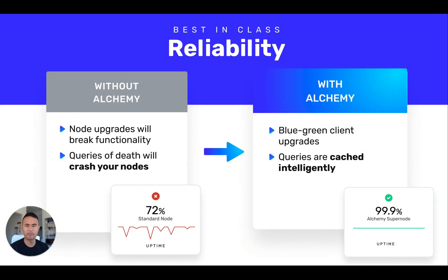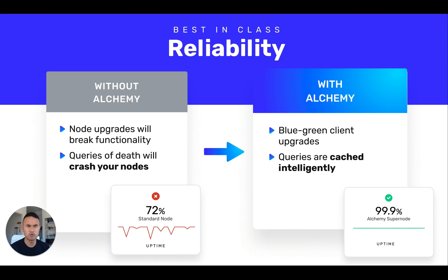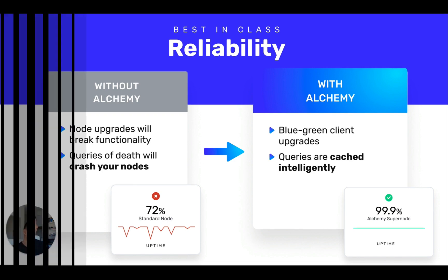Secondly, Alchemy's reliability is legendary. We've got over 99% uptime, which is the best in class. That's because of an insanely complicated architecture we run called SuperNode that intelligently caches queries, handles upgrades, and handles bursts of requests smoothly. If you're a DeFi exchange, a few minutes of downtime can literally cost you millions of dollars. So don't let this happen to you.